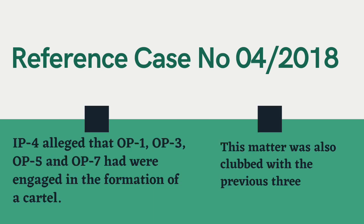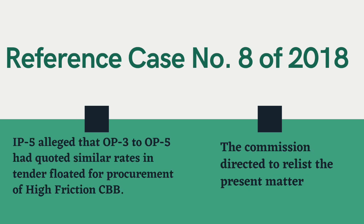Reference case No. 4 was filed by IP4, who alleged that OP1, OP3, OP5, and OP7 had contravened Section 3, Subsection 1 and were engaged in the formation of a cartel. It was further alleged that in a tender floated by the informant, all opposite parties quoted identical bids. Reference No. 5 was filed by IP5, who alleged that OP3 to OP5 had quoted similar rates in the tender floated for procurement of high-friction CBBs.